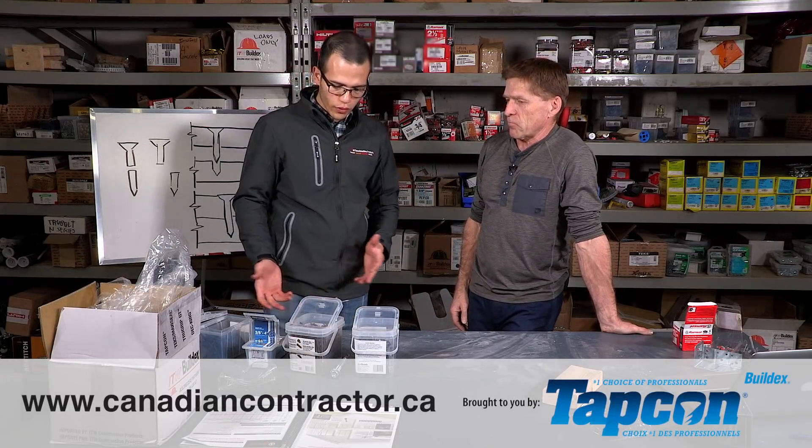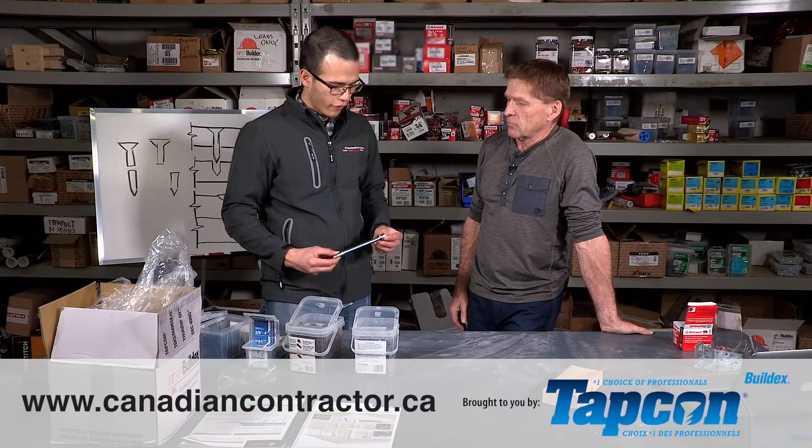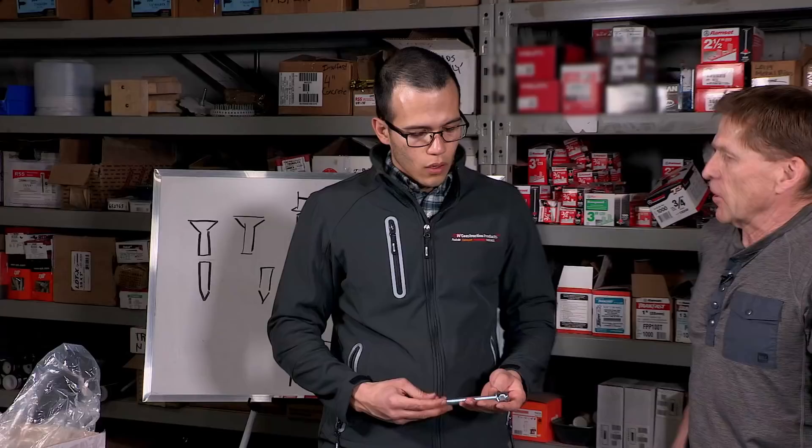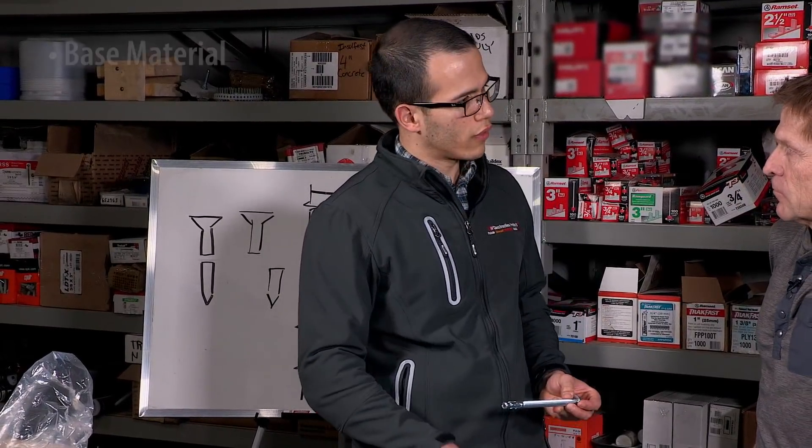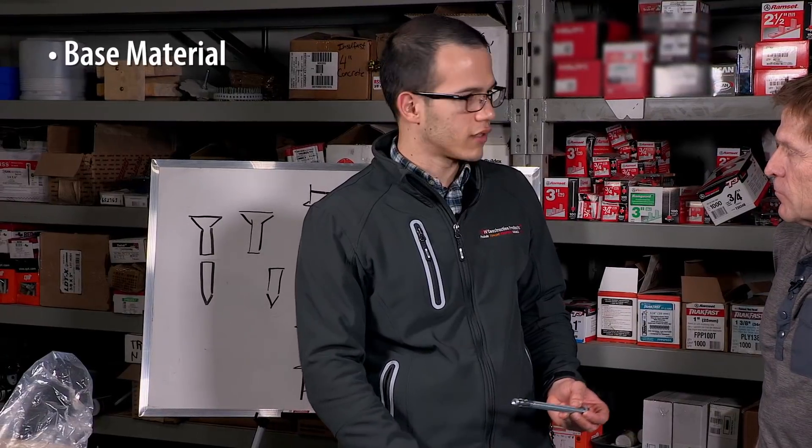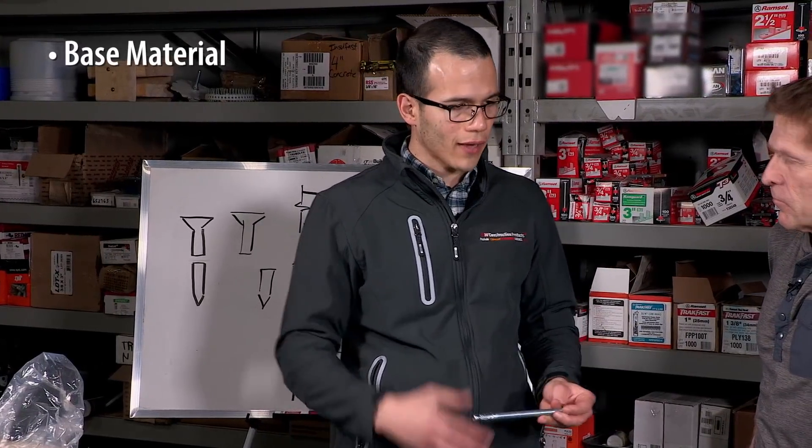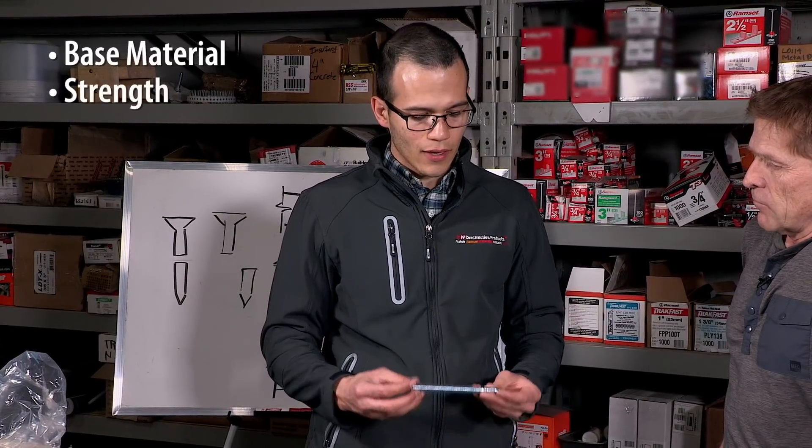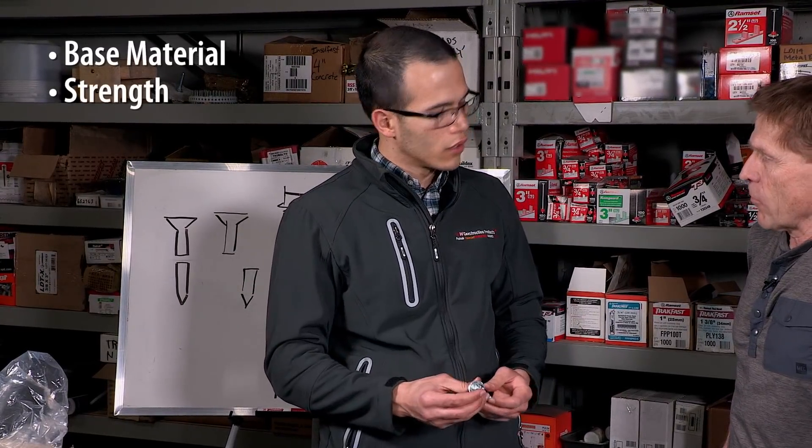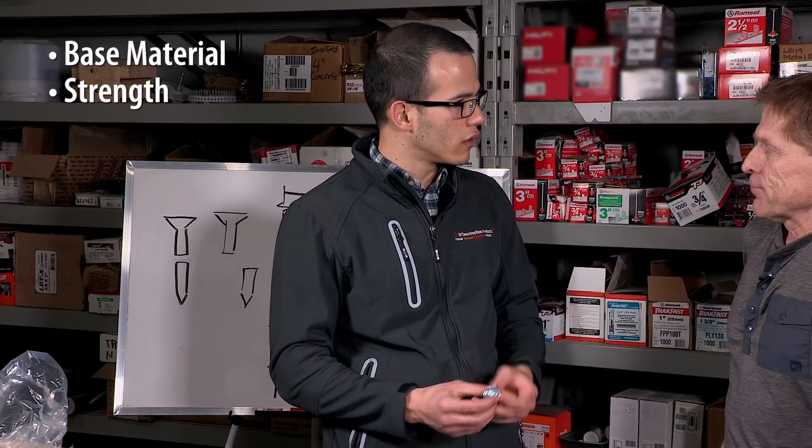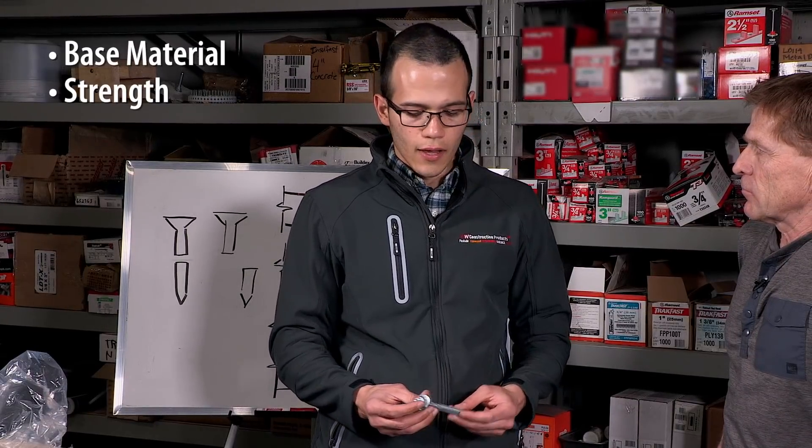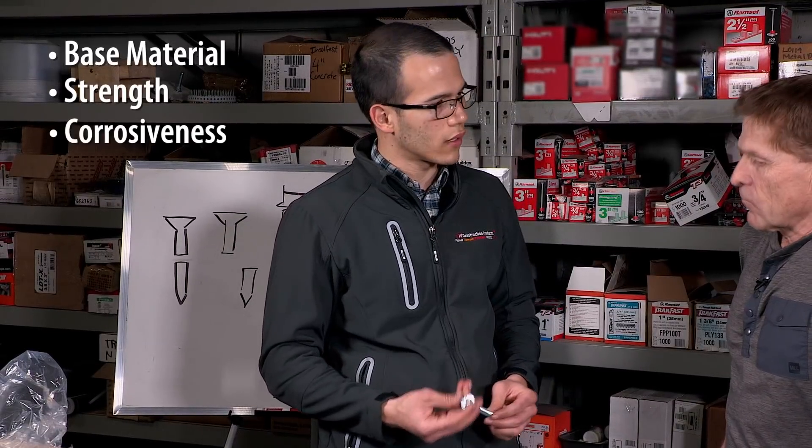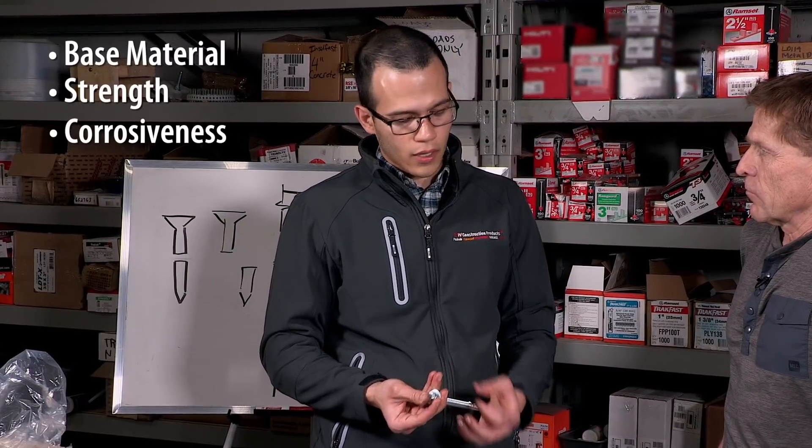When we're evaluating a fastener, there are three main things that we look at. We look at how it performs with the base material that it's intended to go into - how it interacts, how the pull-out is. Then the other thing we look at is the strength of the fastener on its own. That basically comes from the steel, the diameter - those will define that. And then the third thing is the corrosion resistance. That's a key one as well and that comes from the coating.